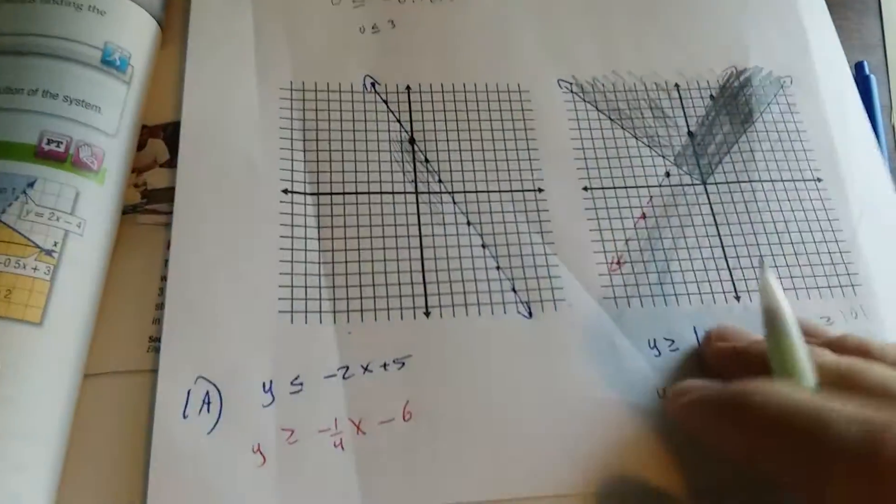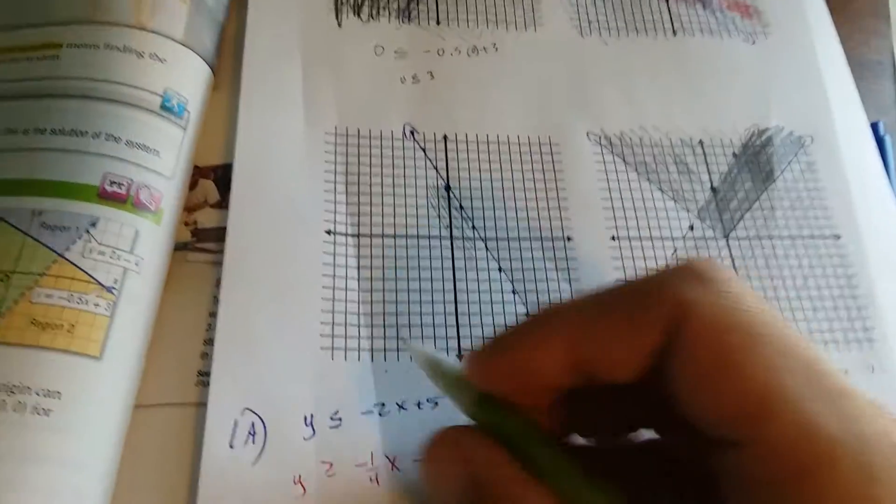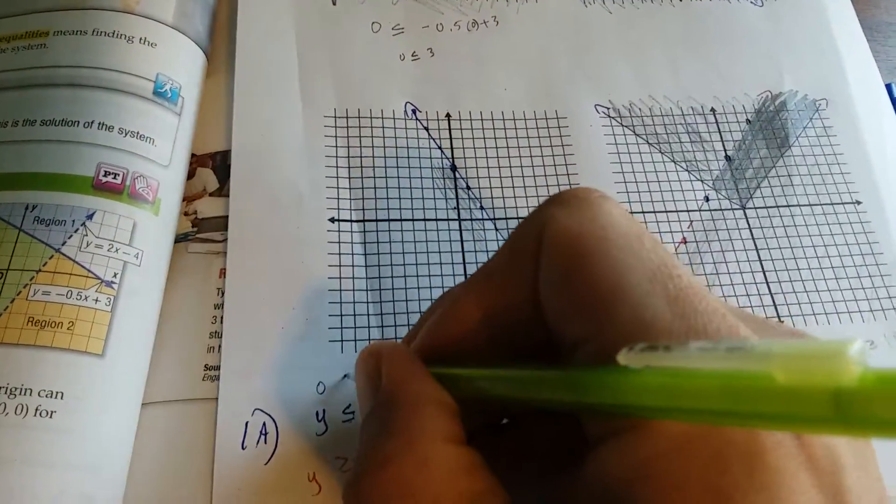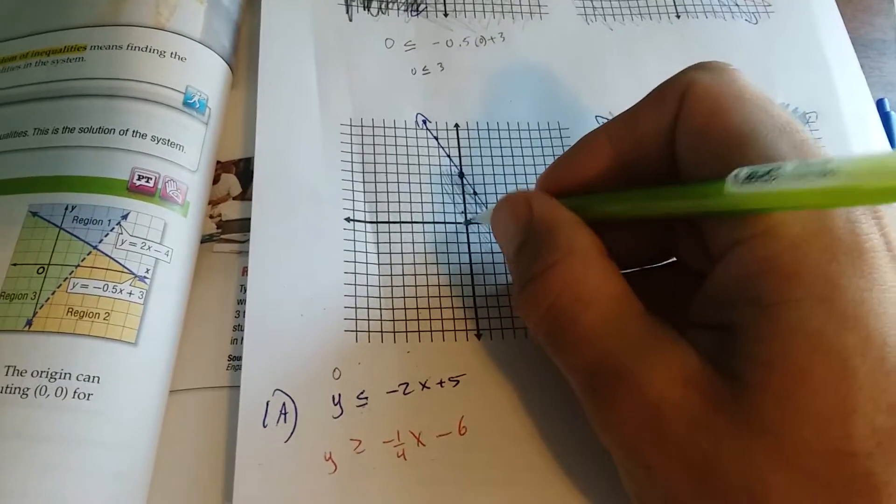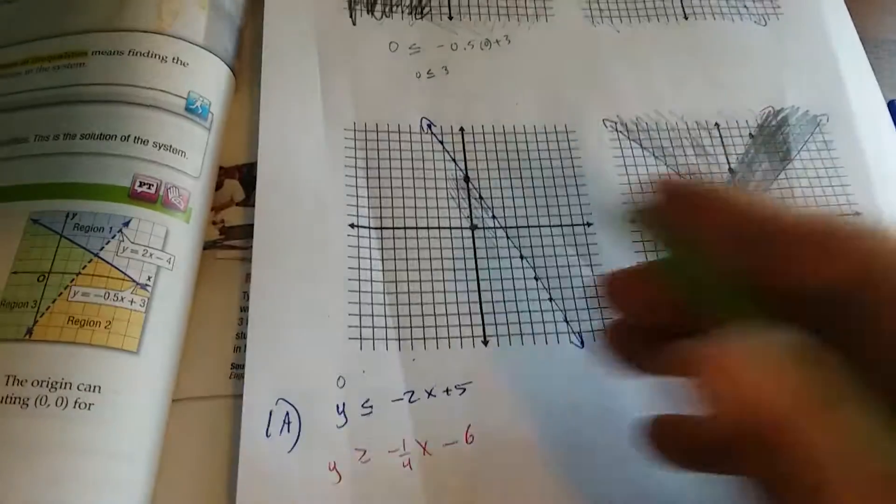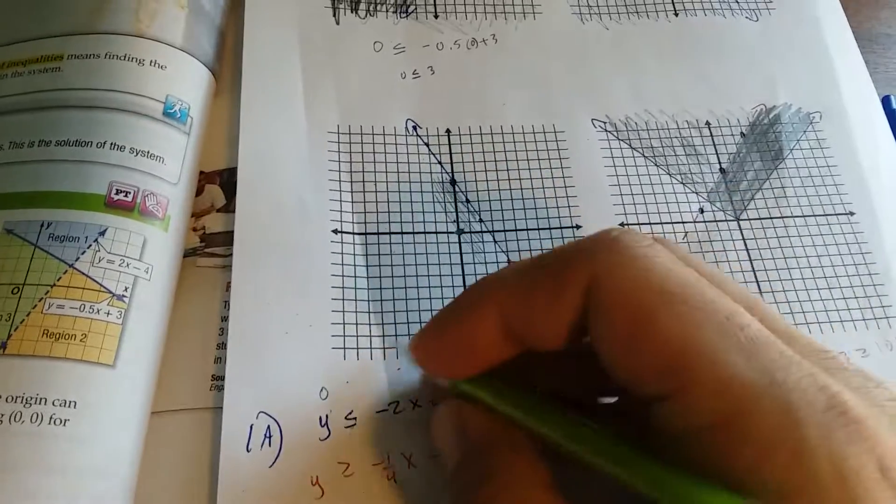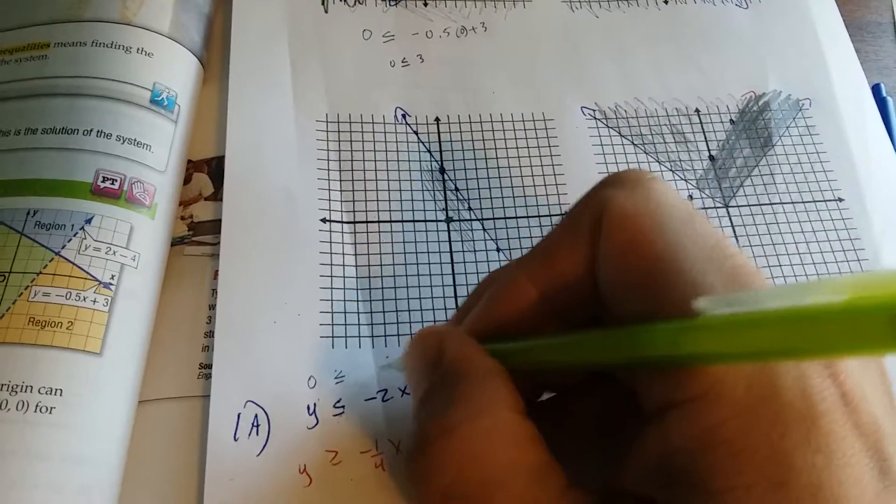And then you could always use a test point. It's 0, so I'm going to use 0, 0. If this is in the solution space, if I replace y and x with 0, both, this is going to make sense.